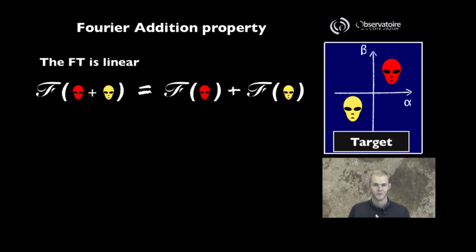Let's see how this applies to what we're doing. Imagine that the model you think is relevant is made of two alien faces placed at two separate places in your on-sky coordinates alpha-beta.